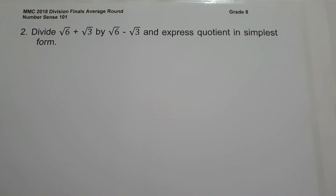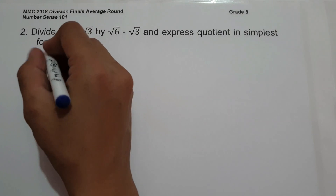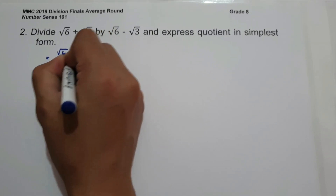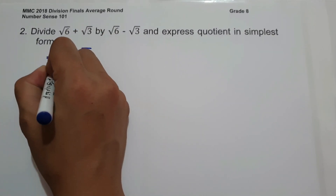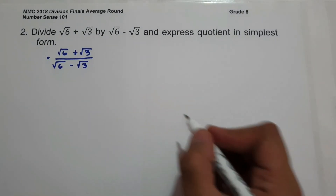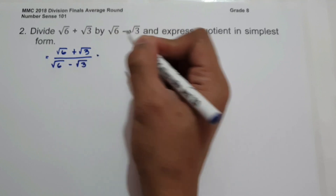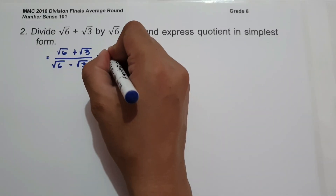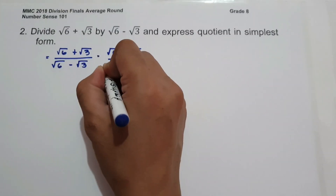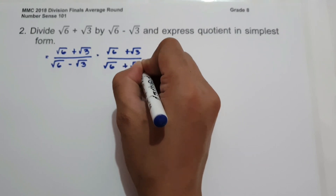On number 2, divide square root of 6 plus square root of 3 by square root of 6 minus square root of 3, and express the quotient in simplest form. To find the quotient, let us have square root of 6 plus square root of 3 over square root of 6 minus square root of 3. To simplify, let us multiply the numerator and the denominator by the conjugate of the denominator, that is square root of 6 plus square root of 3 over square root of 6 plus square root of 3.